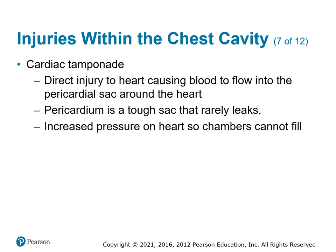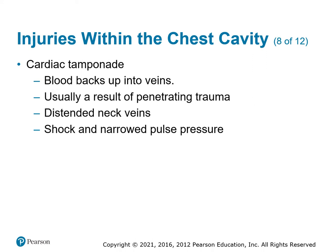Cardiac tamponade is when fluid leaks into the pericardium — the sac around the heart. The pericardium is a fibrous sac that doesn't expand, so the more it fills with blood, the less the heart can expand and contract, putting pressure on the outside of the heart and squeezing it. Look for the mechanism and a narrowing pulse pressure — the pulse pressure is the difference between diastolic and systolic. For example, a systolic of 80 and diastolic of 76 is very narrow. Blood backs up into the veins, usually from penetrating trauma, and you'll see distended neck veins and a very narrow pulse pressure.